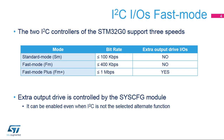The two I2C controllers present in the STM32G0 support three speeds: Standard Mode, with a maximum bit rate of 100 kilobits per second; Fast Mode, with a maximum bit rate of 400 kilobits per second; and Fast Mode Plus, with a maximum bit rate of 1 megabit per second. Fast Mode Plus requires a high drive capability, which is enabled in the SYSCFG module.